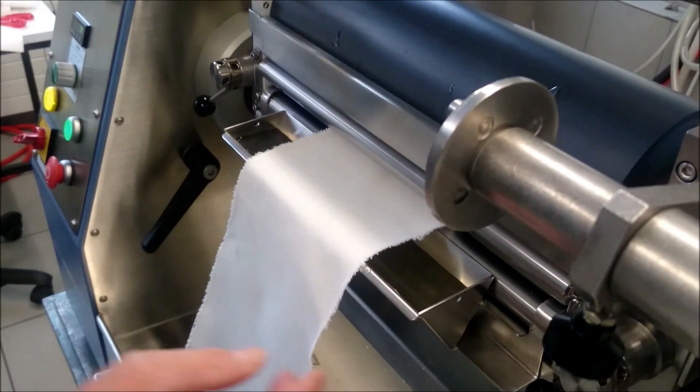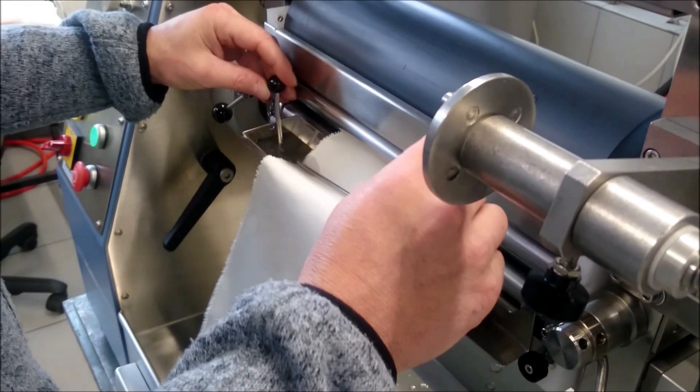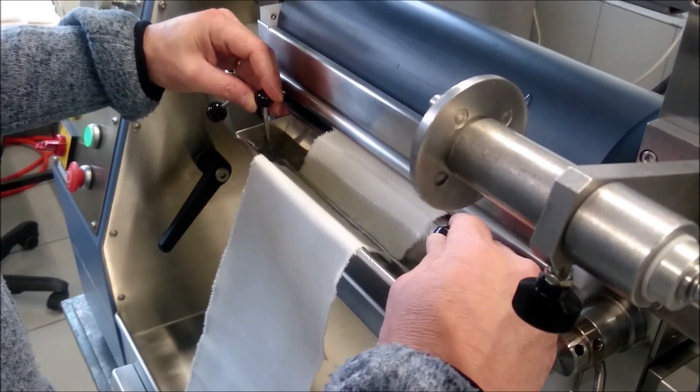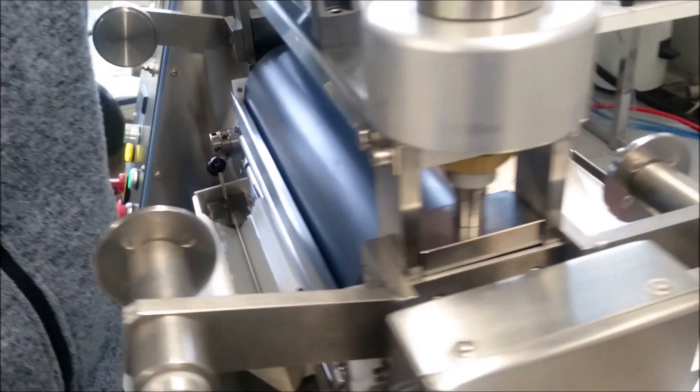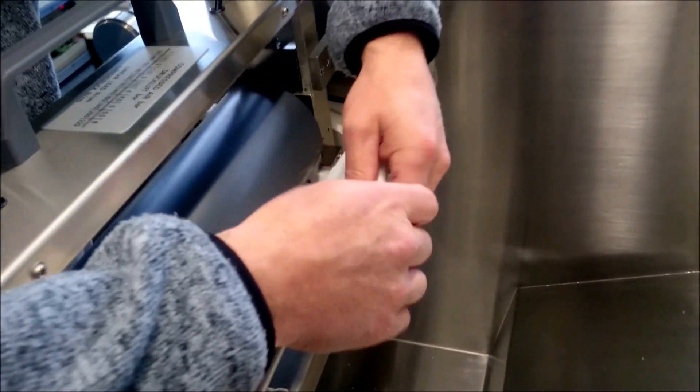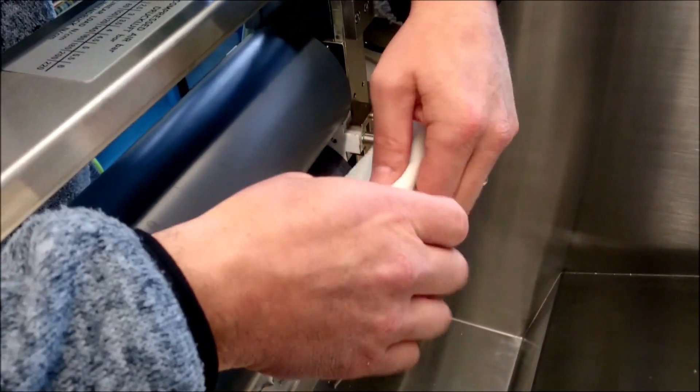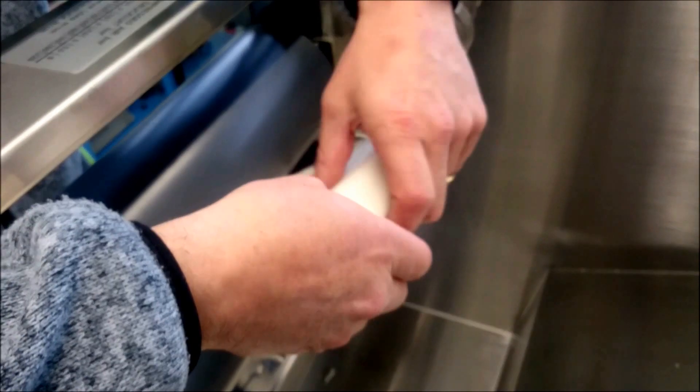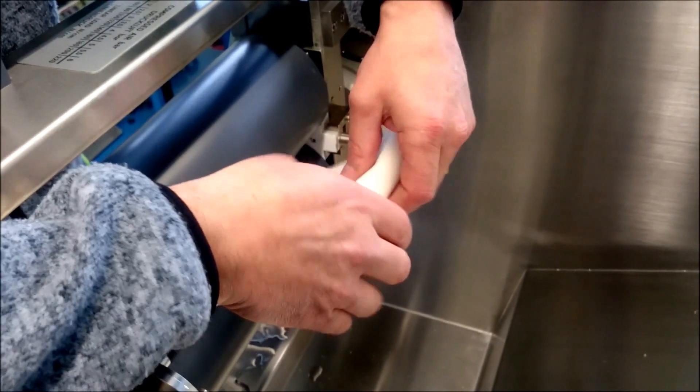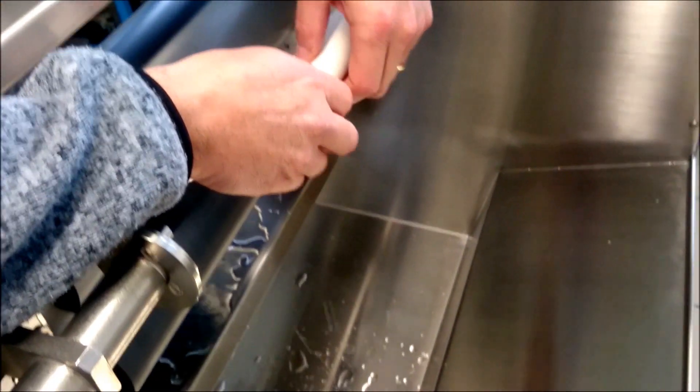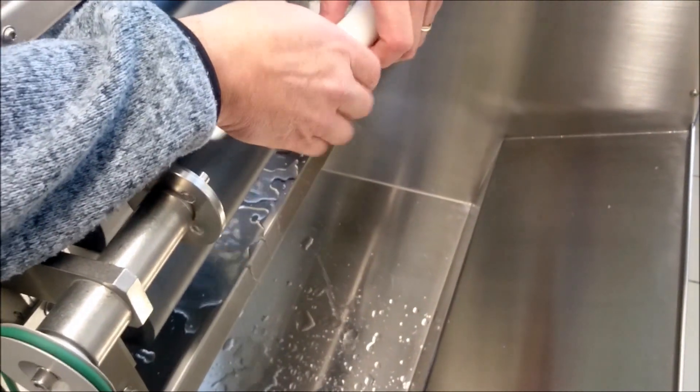Then we stop the machine. We put it inside here and start again. And we roll up the samples on the back side. Like this one.